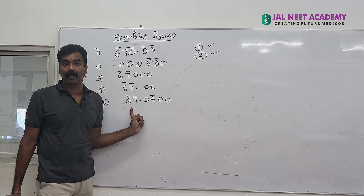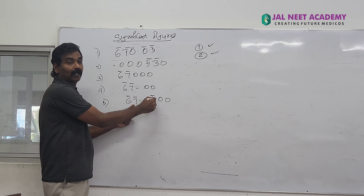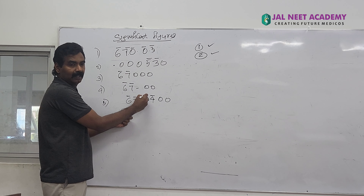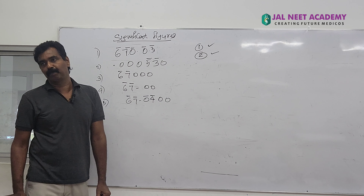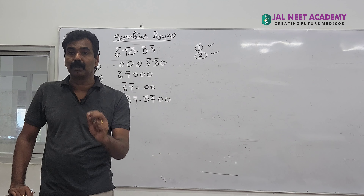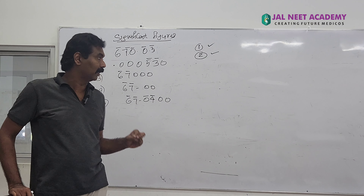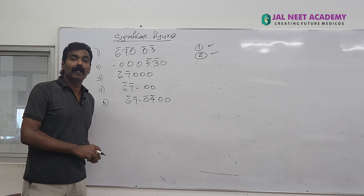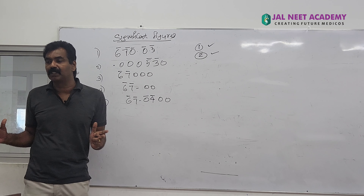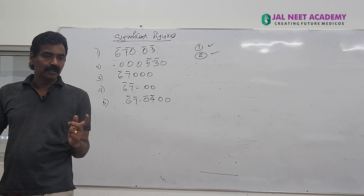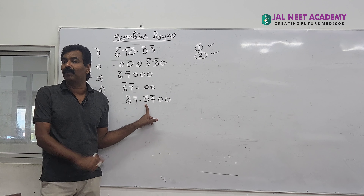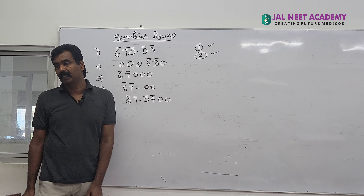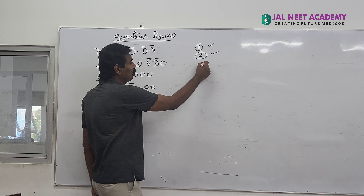For the last number with 7 and 4, the zeros in between are also significant. So far we have applied Rule 1 — all non-zero digits are significant — and Rule 2 — zeros between any two non-zero digits are significant.